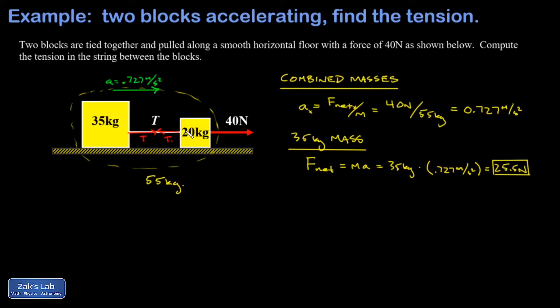Then we can do a quick force analysis on the 20 kilogram block and just make sure it's accelerating at the right rate. The rope pulls to the left on it with 25 and a half newtons, the applied force pulls to the right on it with 40 newtons.